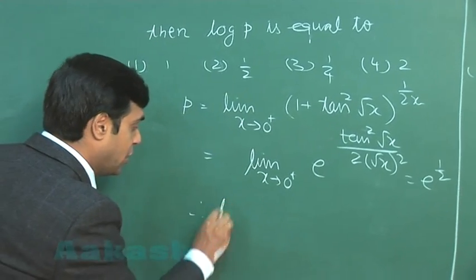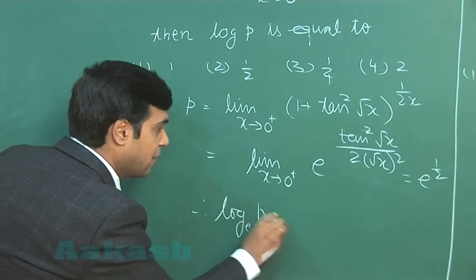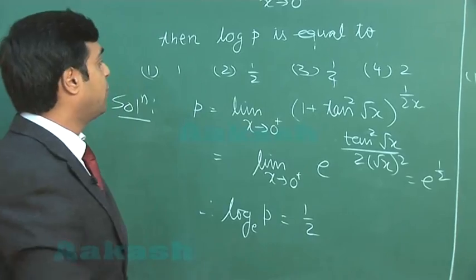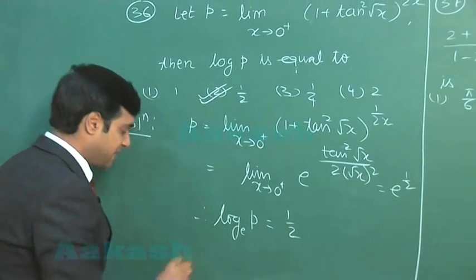Hence, log p to the base e, this comes half. This point is clear. So we can see option 2 is the correct one.